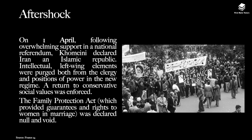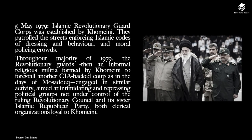Intellectual left-wing elements were purged both from the clergy and from positions of power in the new regime, and there was a massive return to conservative social values. The Family Protection Act, which had provided guarantees and rights to women in marriage, was declared null and void. On 5th May 1979, Islamic Revolutionary Guard courts were established by Khomeini. They patrolled the streets, enforcing Islamic codes of dress and behaviour and moral policing of crowds. Throughout the majority of 1979, the Revolutionary Guards — an informal religious militia formed by Khomeini to forestall another CIA-backed coup — engaged in intimidating and repressing political groups not under the ruling Revolutionary Council and its sister Islamic Republican Party, both clerical organisations loyal to Khomeini.